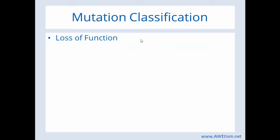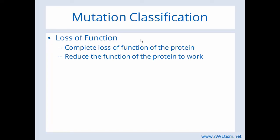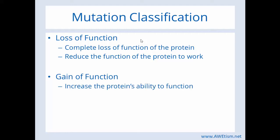Now, mutation classification. You could have a loss of function — meaning a complete loss of function of the protein, or a reduction in the protein's ability to work. When you have a different amino acid, it might cause complete loss of function, or you might just have a protein that doesn't work as well as it would without that mutation. You could also have a gain of function — sometimes mutations cause an increase in the protein's ability to function, or a new function occurs entirely.